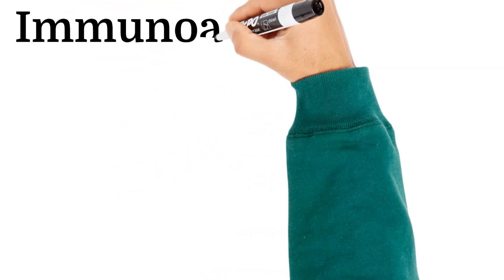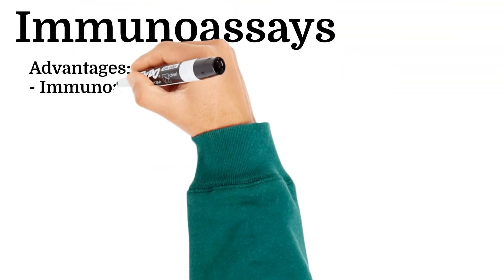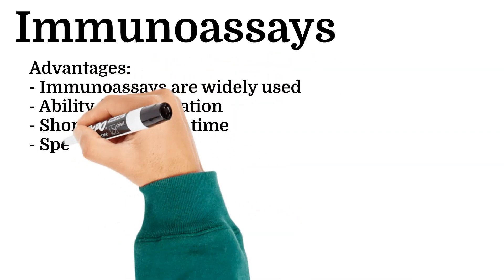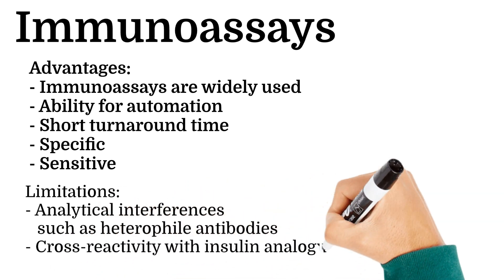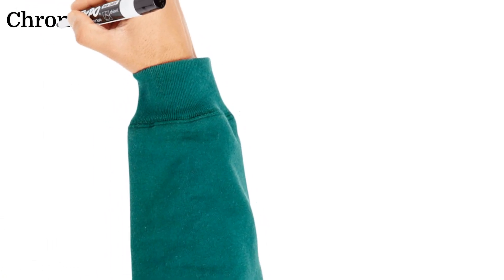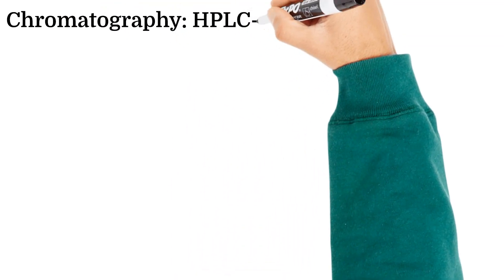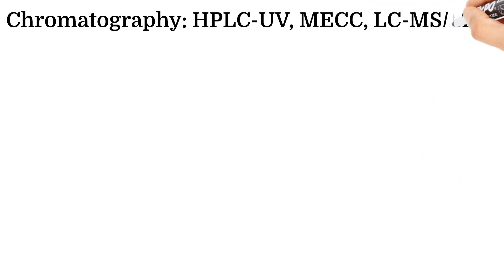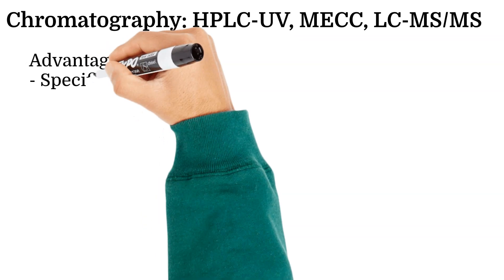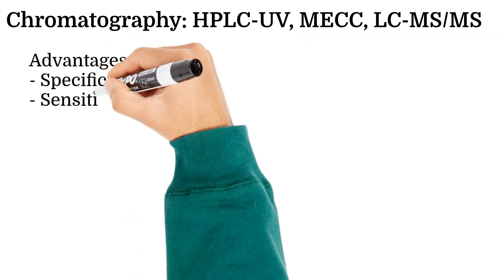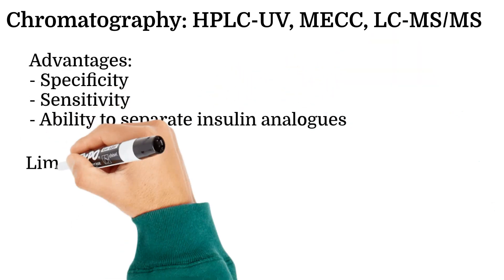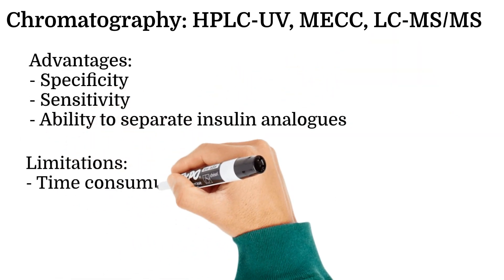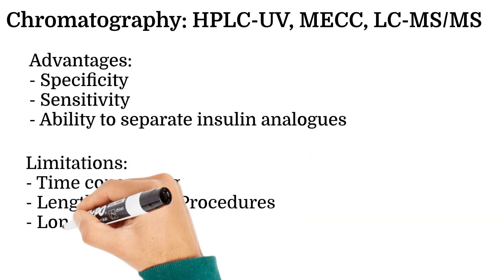Immunoassays are widely used and available on automated platforms. However, they suffer from interferences such as heterophile antibodies and cross-reactivity with exogenous insulin analogues. Other methods such as high-performance liquid chromatography with UV detection, electrophoresis, and mass spectrometry offer superior specificity, sensitivity, and accuracy for insulin and its analogues, but are time-consuming due to lengthy manual procedures and thus have longer turnaround times, making them unsuitable for high-throughput laboratories.